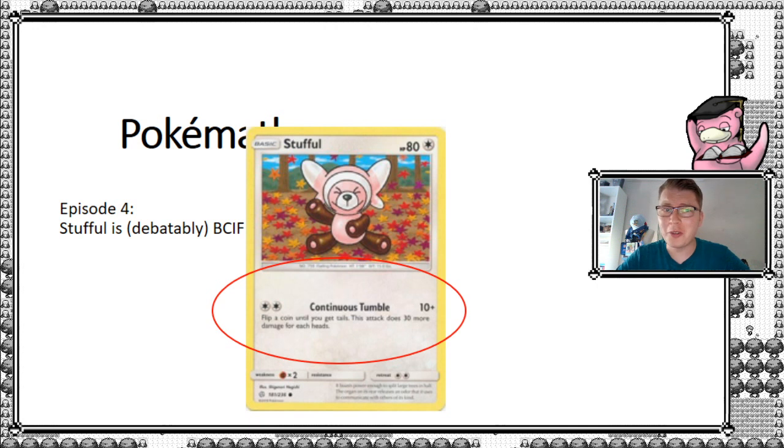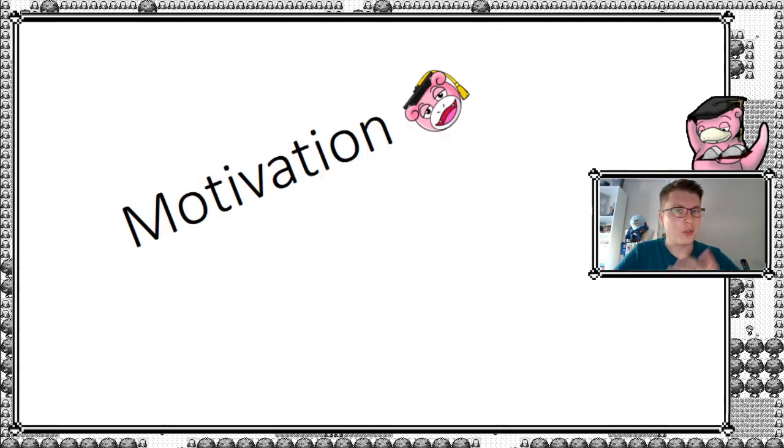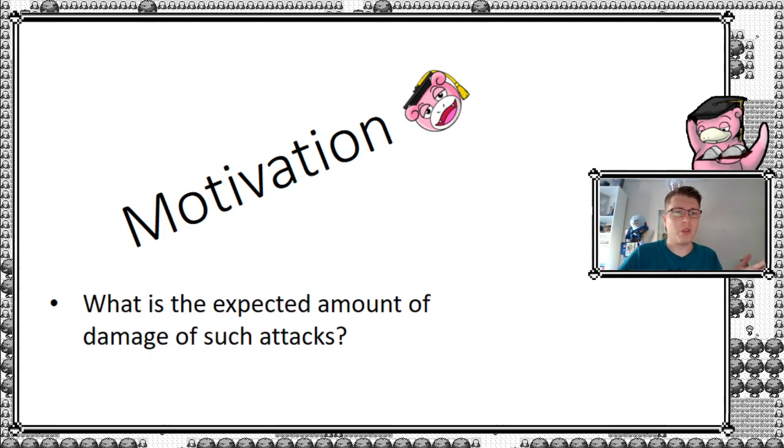So what are we actually going to do today? Well we're going to look at such types of attacks. So without further ado, let's get into continuous tumbling. So the motivation for this is, well, how much damage could you actually expect of such attack? We all know they will say, flip until you get tails for each head, do X amount of damage. And then you'll be like, but I'm pretty good at flipping heads, am I? That means that card is just for me. So let's just check it out.